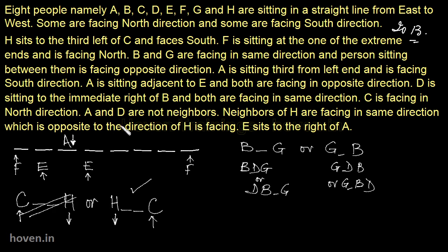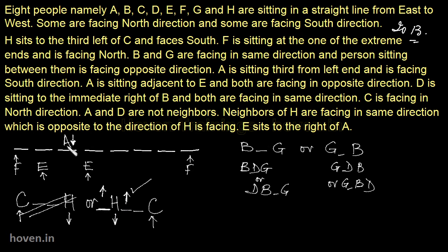Neighbors of H are facing in the same direction which is opposite to the direction of H. H has two persons surrounding him, so I mark one space on each side with upward arrows — both neighbors face upwards since H faces downwards (south). Then: E sits to the right of A. Since A faces south (downward), right would be towards a specific side. So I cross off the wrong option for E and write E to the right of A with an upward arrow — now finalized.